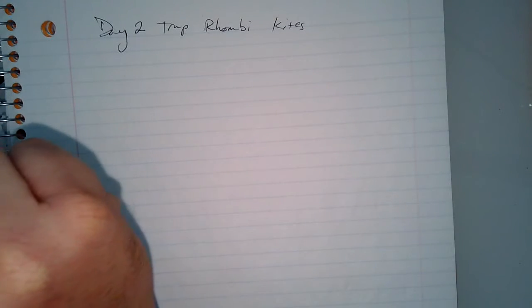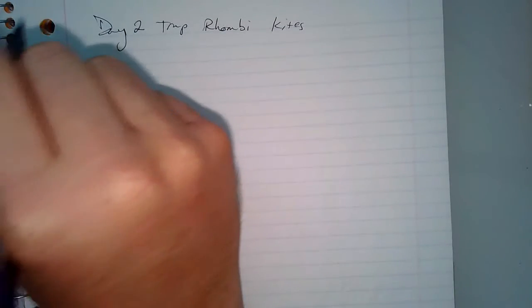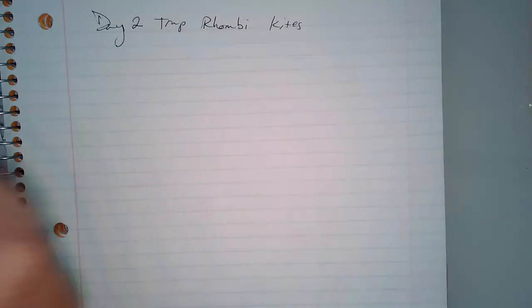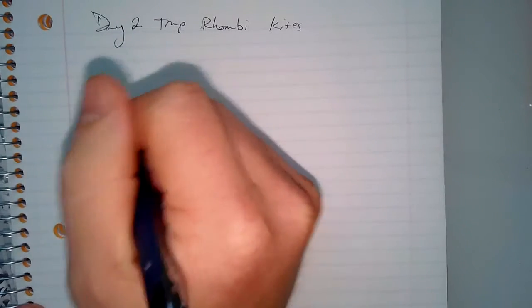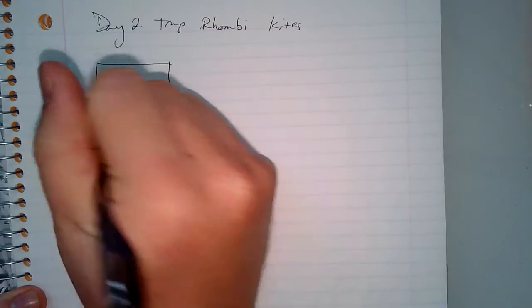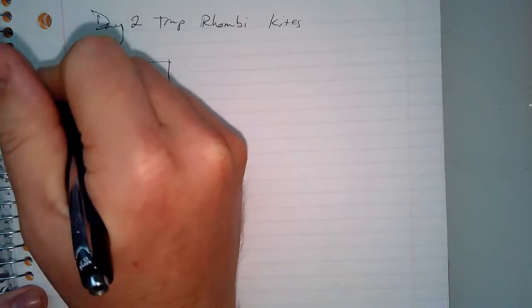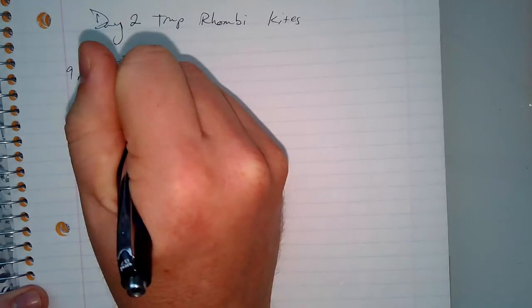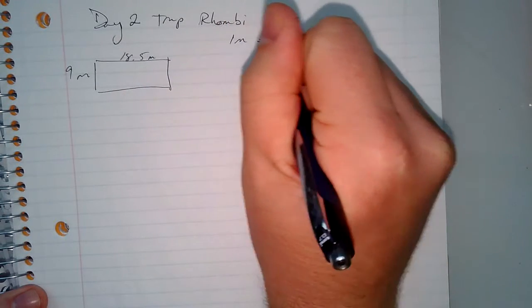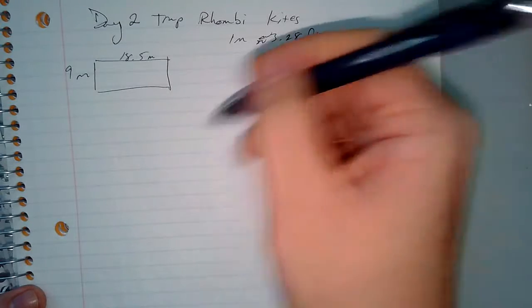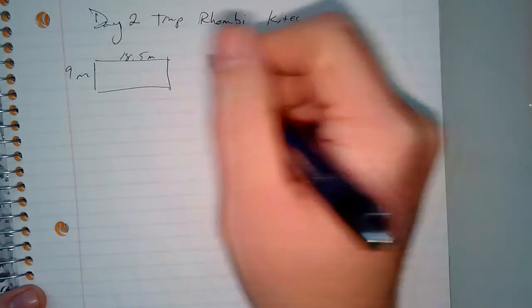This is a warm-up on trapezoid, rhombus, and kite areas. Notice it says to change this to square feet and gives you a rectangle. This is 9 meters and 18.5 meters, and it says one meter is approximately equal to 3.28 feet.